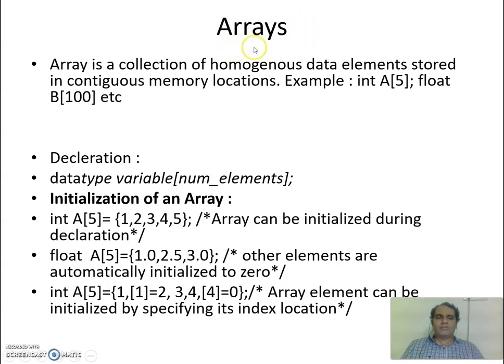Example: int A[5]. That means 5 memory locations which can hold integers are now allocated with the name A. Float B[100] means 100 memory locations each of type float. If we think about the memory that is getting allocated, float, int, let's say.